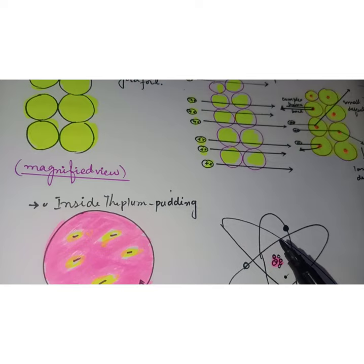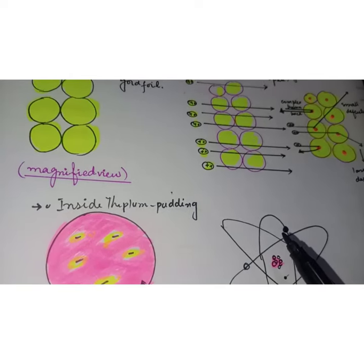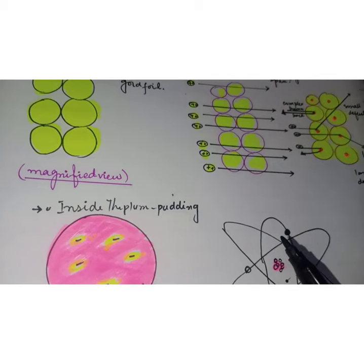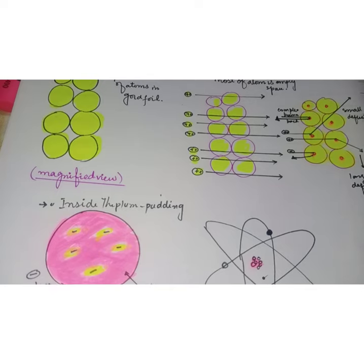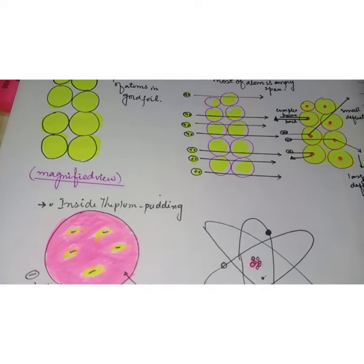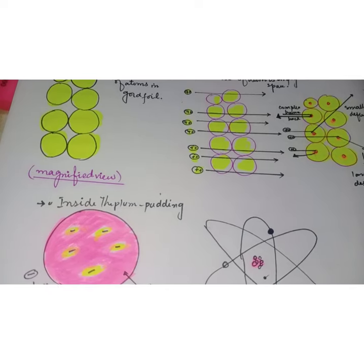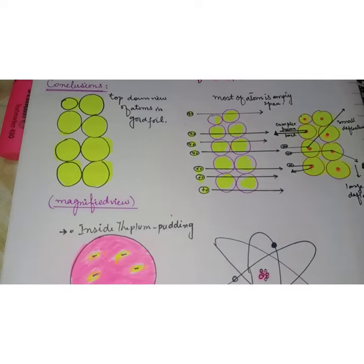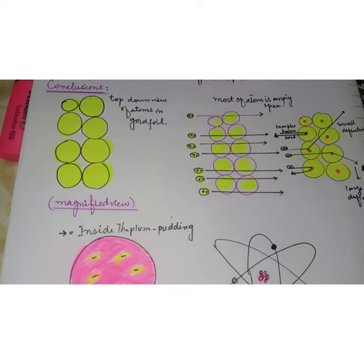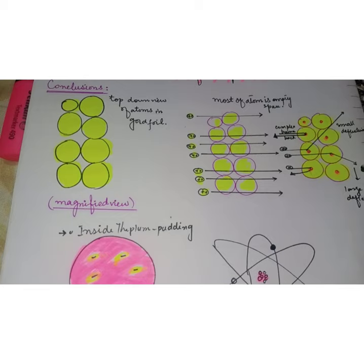It was all about the Rutherford atomic model and how he concluded what atoms actually look like. Basically, Rutherford and his colleagues performed this famous gold foil experiment to understand how negative and positive charges could coexist in an atom. For this purpose they shot alpha particles on the incredibly thin gold foil.